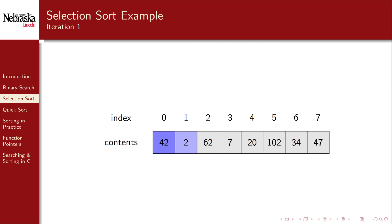We start at the front and iterate through to see if we can find something smaller than 42. 2 is our new smallest element. We then proceed with the rest of the array.